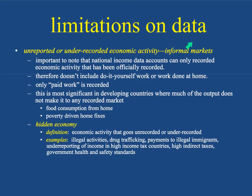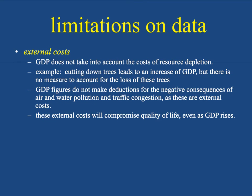There are also external costs — GDP figures do not take into account the cost of resource depletion. For example, cutting down trees leads to an increase in GDP, but there's no measure to account for the loss of those trees. GDP figures do not make deductions for negative consequences like air and water pollution and traffic congestion. These external costs compromise quality of life even as GDP rises, which is why green GDP subtracts environmental damage from GDP.